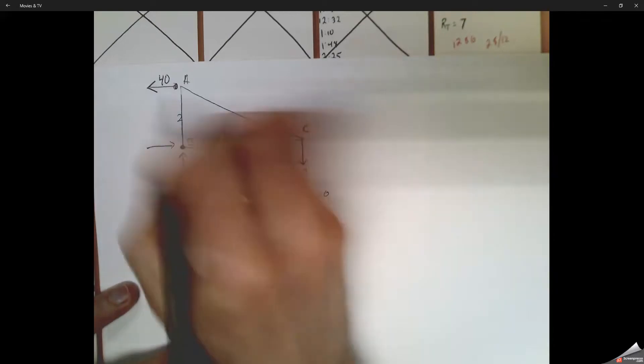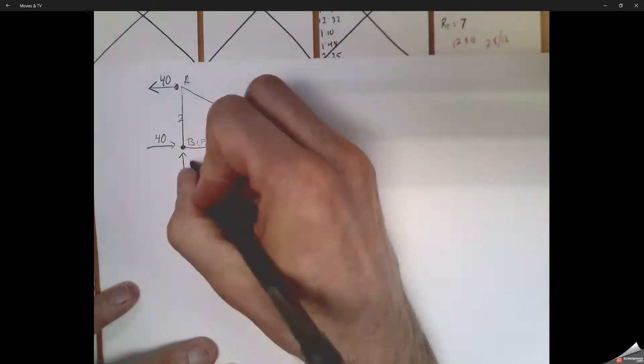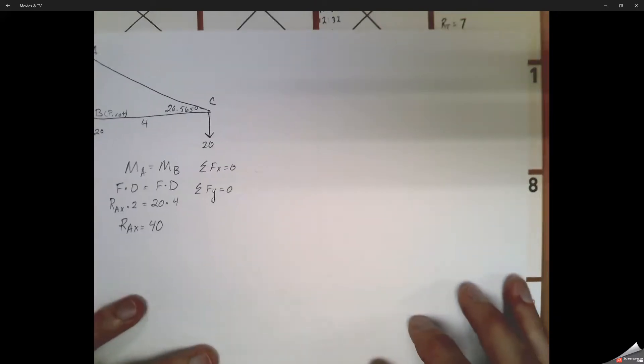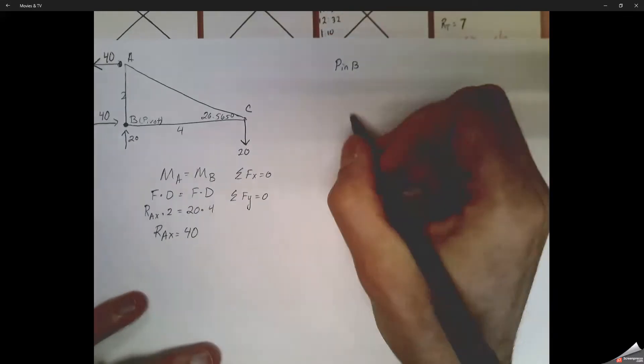Sum of all the forces in the x direction needs to equal 0. Sum of all the forces in the y direction needs to equal 0. So if A is going, the force in the x direction is going 40 to the left, that means at B, that force of x needs to be going to the right. And the same thing at pin B. If we've got 20 down at C, that means we've got to go 20 up at B.